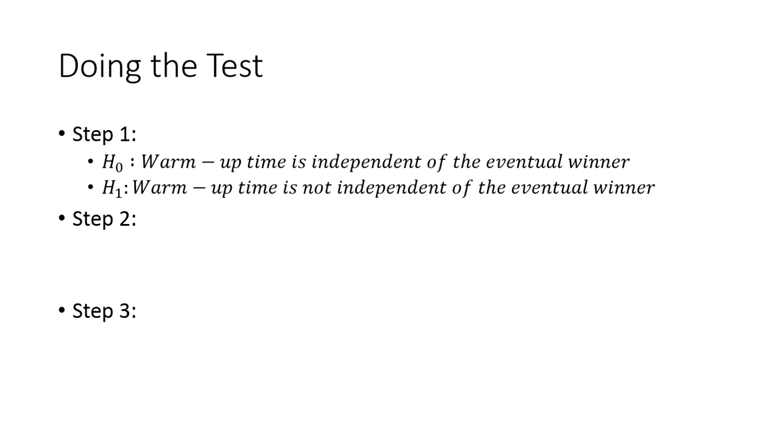Step two, which is stating our alpha, we're going to say alpha is 0.1, so we're saying it's about 90 percentile. So we're going to say we're about 90 percent sure about something. And then step three is what test you're using, in which we're using a chi-square test for independence, is what we would be using.